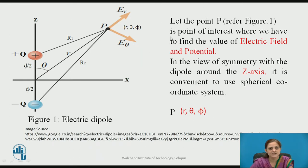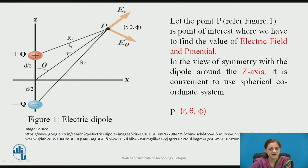Now consider the figure for the electric dipole. Point P is the point of interest where we want to calculate the value of electric field and the potential. The electric dipole consists of plus Q and minus Q separated by the distance small d. It lies on the z-axis. From the center of the dipole, plus Q is placed at distance d/2 and minus Q is placed at distance minus d/2. Point P is placed at distance R1 from plus Q and at distance R2 from minus Q.